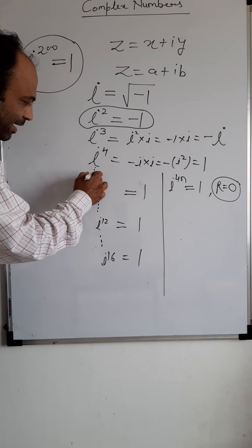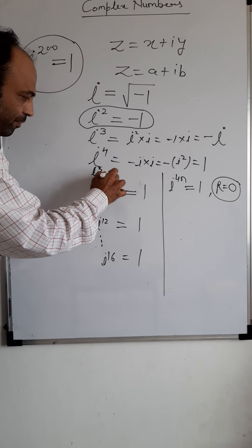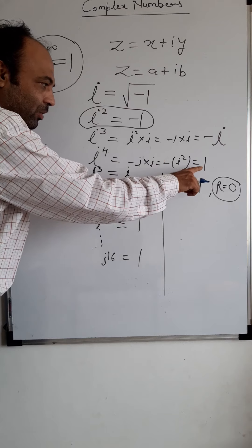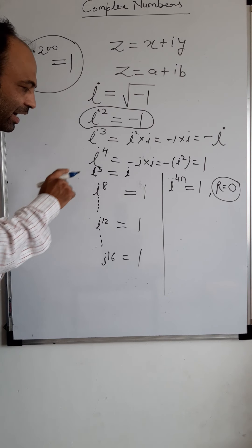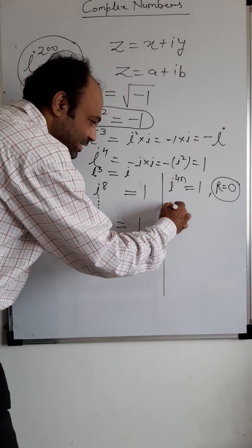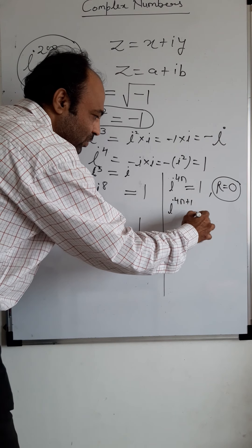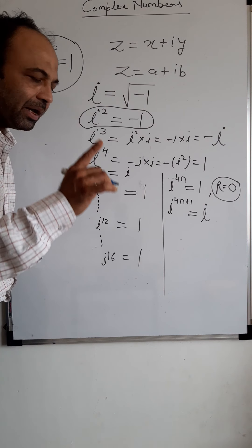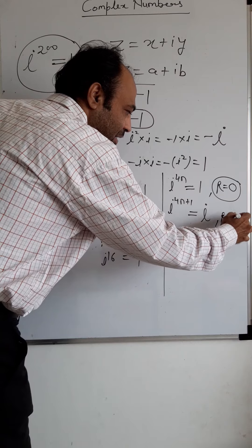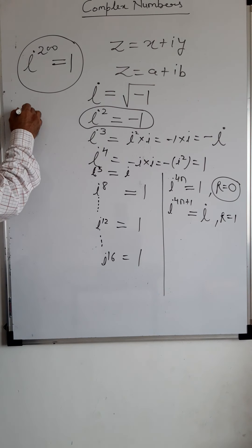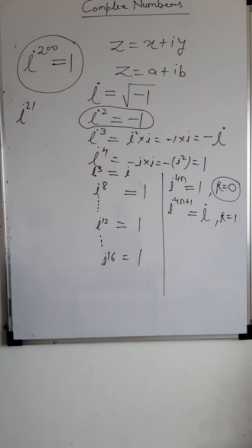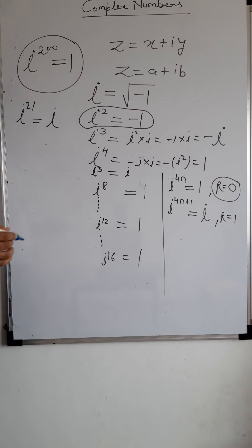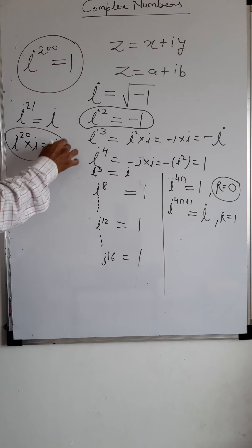Now, after i⁴ comes i⁵, which is i⁴ into i = 1 into i = i. So i to the power 4n+1 gives us i — meaning if dividing the power by 4 gives remainder 1, the value is i. For example, i^21: divide 21 by 4, remainder is 1, so the value is i. You can also verify: i^20 into i = 1 into i = i.